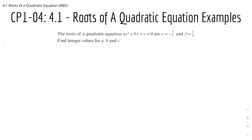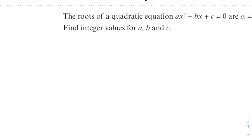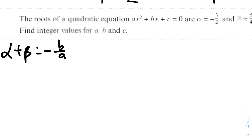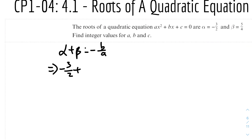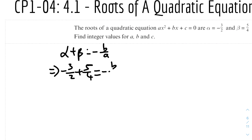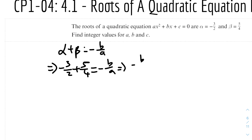In the last example, the roots of ax squared plus bx plus c equals 0 are alpha equals minus 3 over 2 and beta equals 5 over 4. Find the integer values of a, b, and c — working backwards. The sum of roots alpha plus beta equals minus b over a. Adding the roots: (5 over 4) plus (minus 3 over 2) equals minus 1 over 4. Rearranging gives a equals 4b.